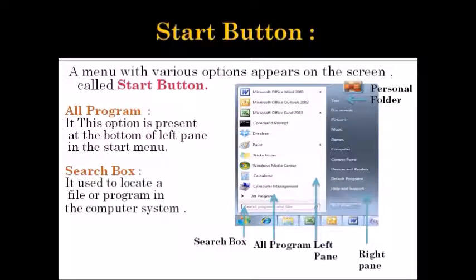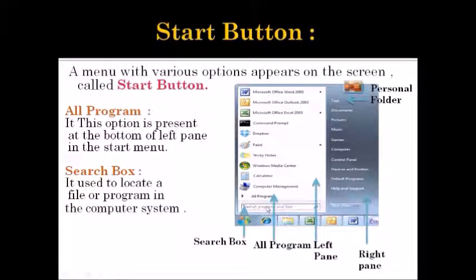The All Programs option is present at the bottom of the left panel in the Start Menu. When clicked, it gives a list of programs in alphabetical order, followed by a list of folders which are quickly accessible with a single click. Just below All Programs, the Search Box provides the convenience to locate a file, folder, or program in the computer system. This search can be performed using a particular name, its contents, or any words in its properties.